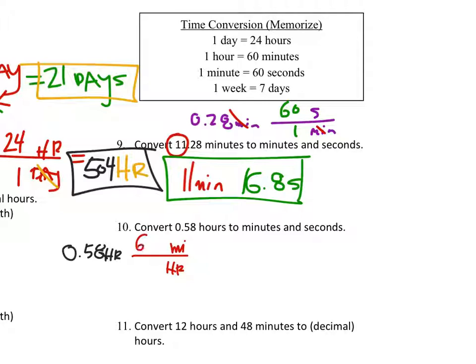So there's 60 minutes in one hour. And yes, my hours cancel out. That's good. 0.58 times 60 gives us 34. That's minutes, by the way. 34.8 minutes. So I know from here I've got 34 minutes. I've just got to figure out how many seconds I have.